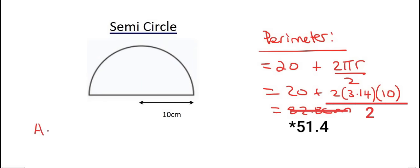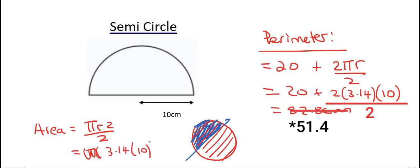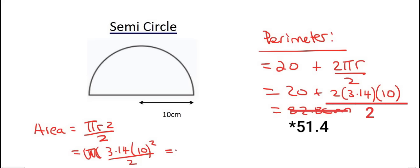Now we're going to work out the area. For a normal circle it would be pi r squared, but we only have half a circle, so area is the stuff on the inside and we only want half of that. So we divide by 2: that's 3.14 times radius 10 squared, divided by 2. That gives us exactly 157 centimeters squared.